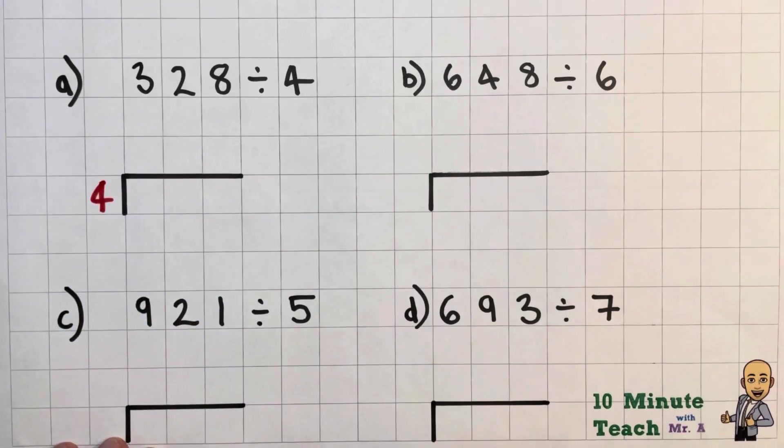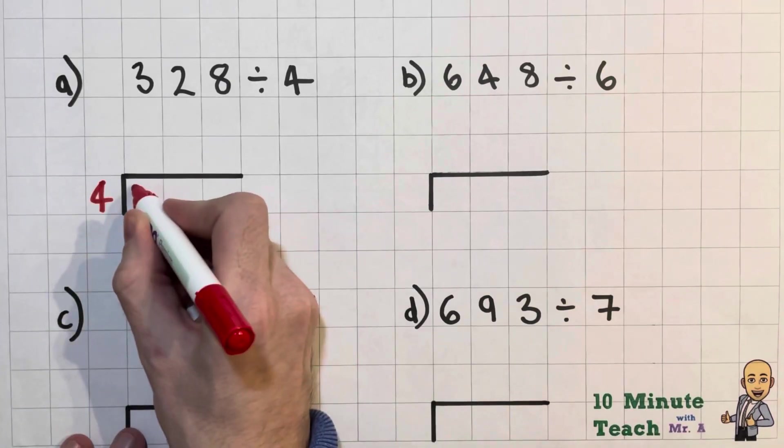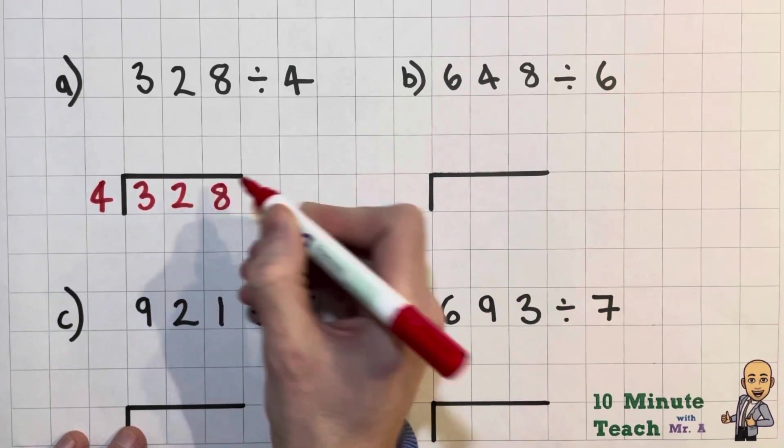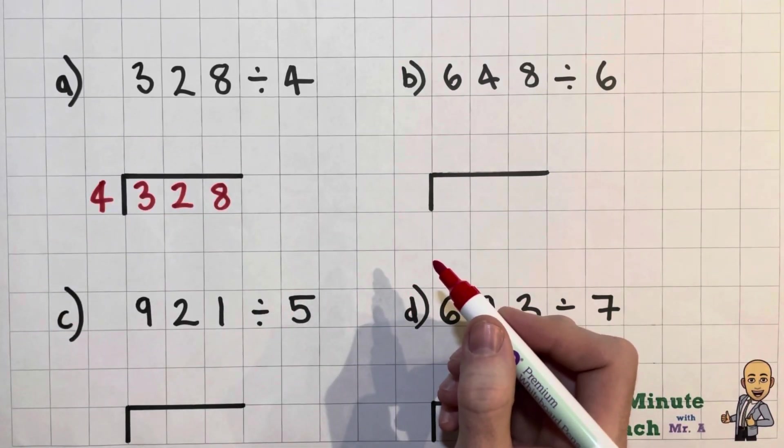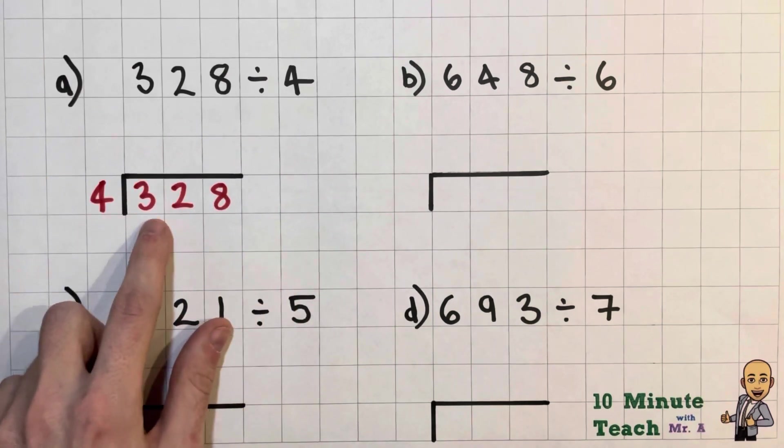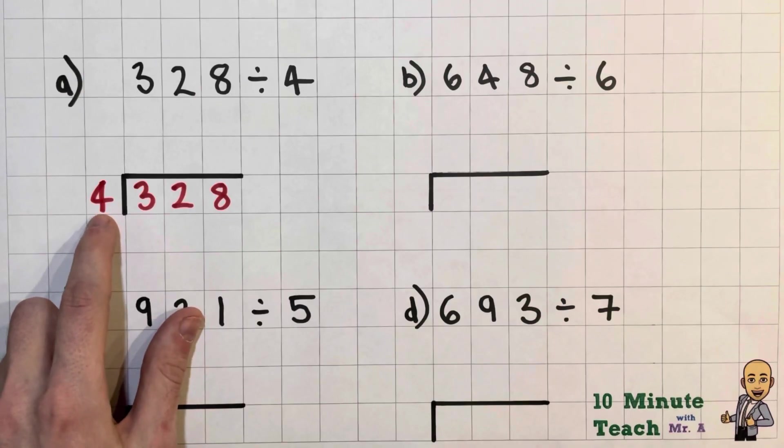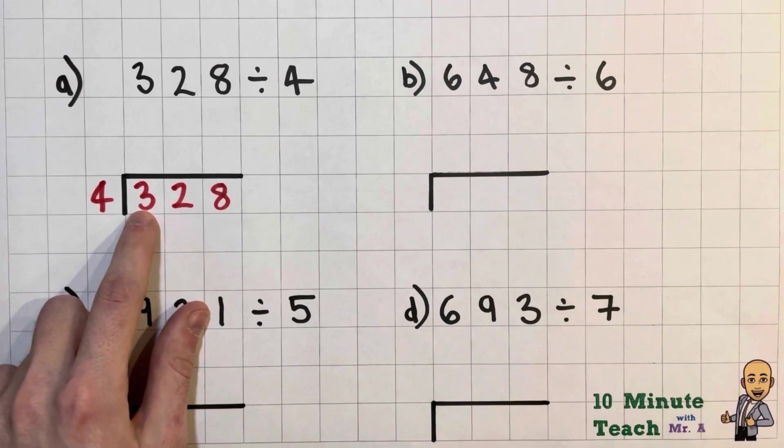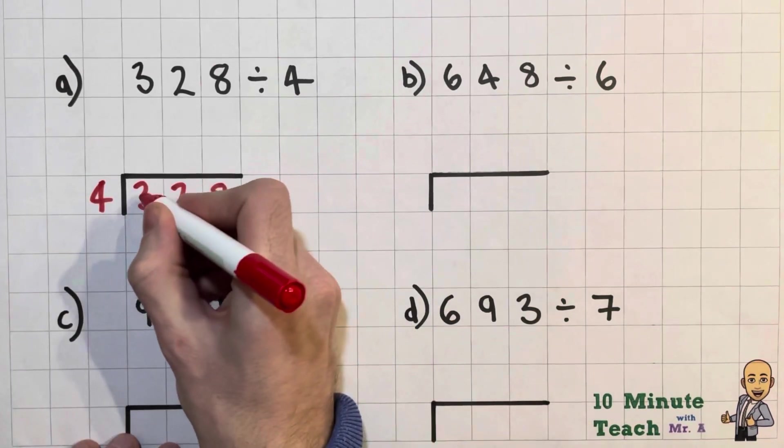So I'm dividing by 4 and we're going to put my 328 inside my bus stop, and my answer is going to go up at the top here. So let's have a little look at this then. I'm splitting this number into this many equal pieces. So we have how many fours can I fit inside a 3? Well I can't actually fit any fours inside a 3.